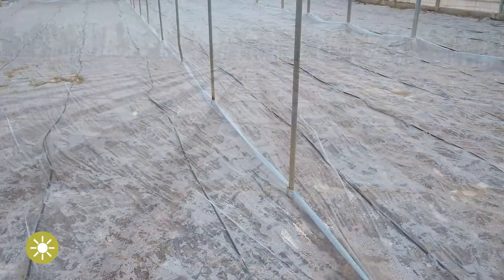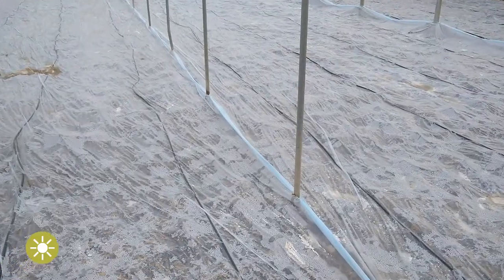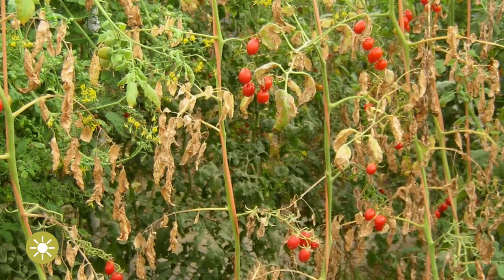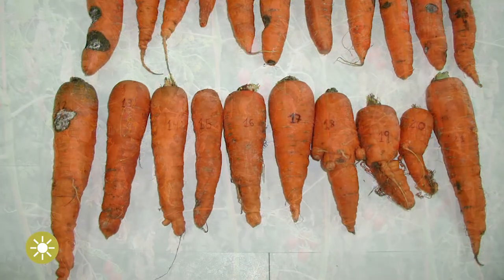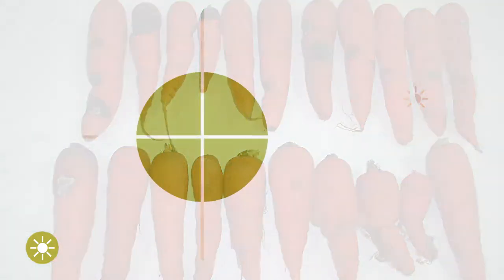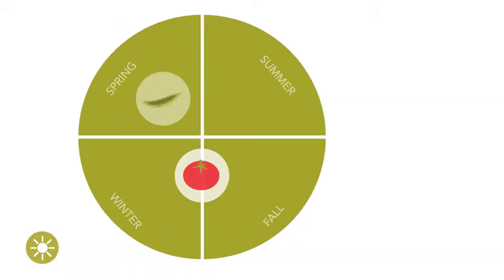Solarization, alone or in combination with organic matter amendments, known as biosolarization, is a highly efficient soil disinfection method. It readily reduces the inoculum level of pathogens in soil before planting, and this is a key factor in fields with a history of soil-borne diseases.